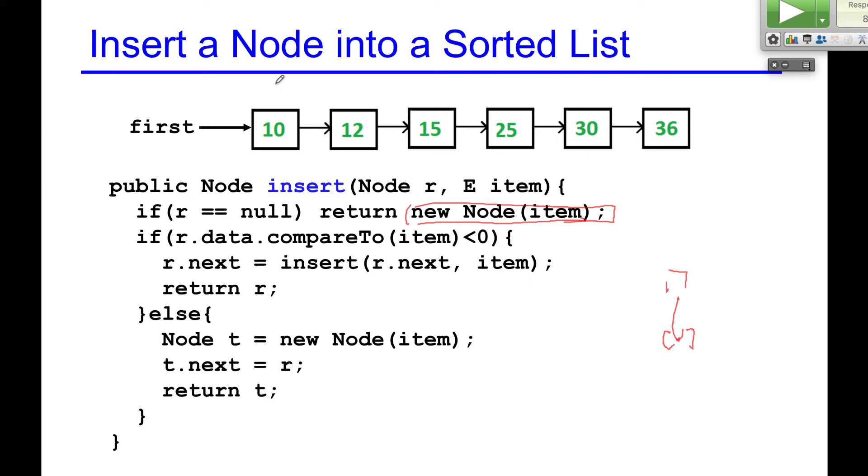Otherwise, if you want to insert 17 here, I have to compare this data to 17. If this 10, let's say I want to insert 7. If you want to insert 7, you compare with 10. 7 is smaller. What are you going to do? You create this case. You create a new node. You call it T. This node.